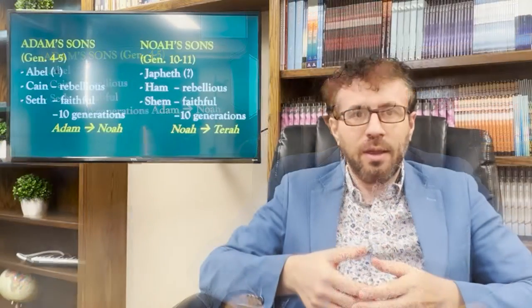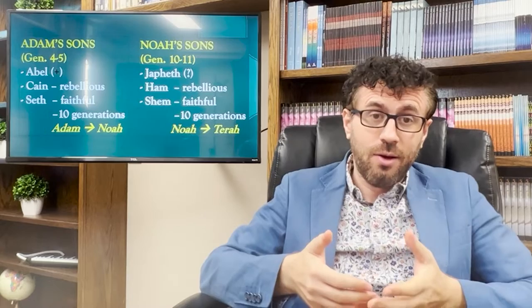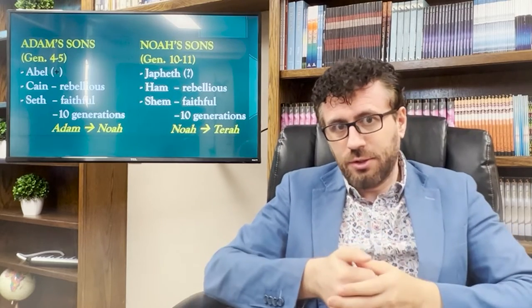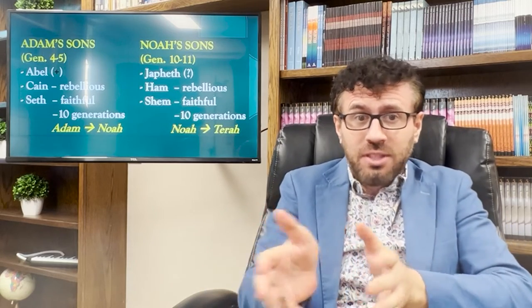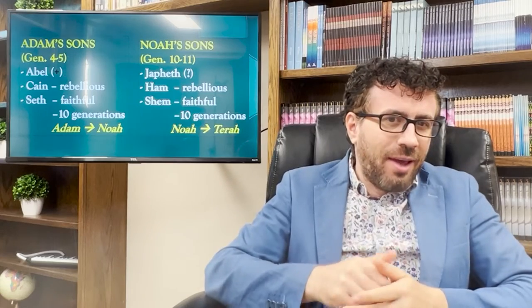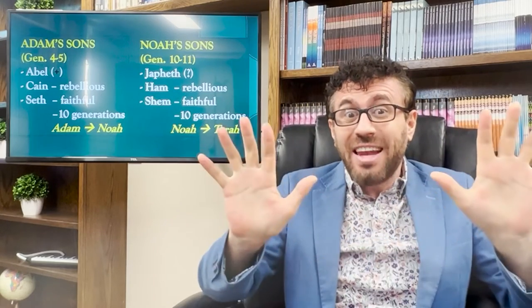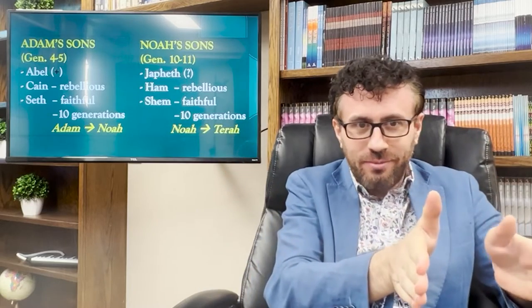In Genesis 4 and 5, we find the genealogies of Adam's sons. Cain's genealogy is rebellious. Abel was killed before he could have any descendants. But Seth's genealogy is faithful and contains ten generations from Adam to Noah. In Genesis 10 and 11, we find the genealogies of Noah's sons. Ham is rebellious. Both Shem and Japheth seem to be in good standing. And in Shem's genealogy, there are ten generations from Noah to Terah.